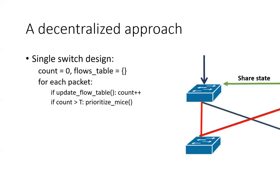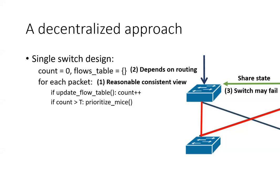A decentralized approach suggests information exchange between switches. This method eliminates the limitation of the centralized approach because switches can exchange information only when necessary. However, unlike the centralized approach, this method is more challenging to implement. For example, it is unclear how to ensure that each switch sees a consistent view of the shared state. It is also unclear how to determine what part of the state is shared and what part is private, as it depends not only on the application itself but also on routing and other network properties. Another issue is how to handle switch failures, and finally, since the switches are connected by an unreliable network, packets may get dropped or delivered out of order. There are many open questions and challenges.